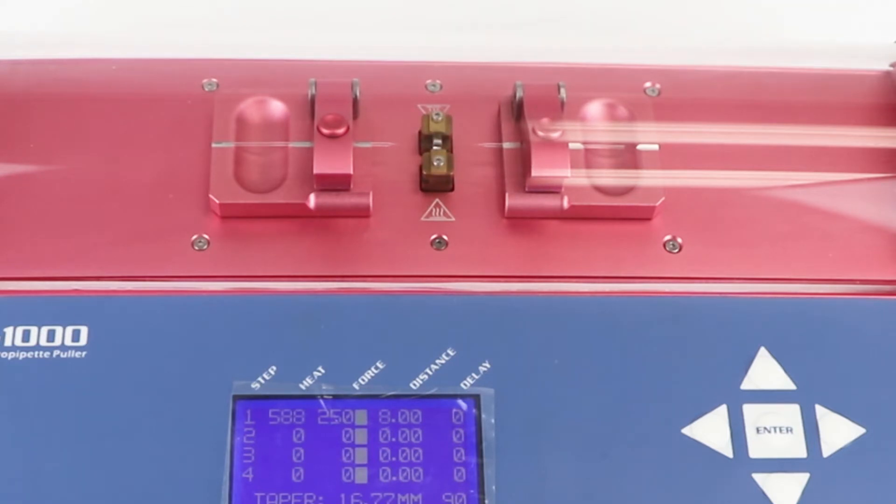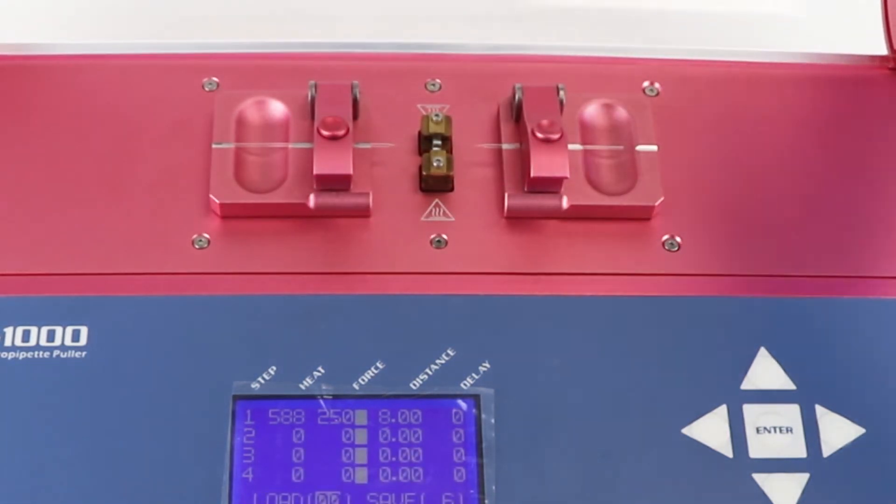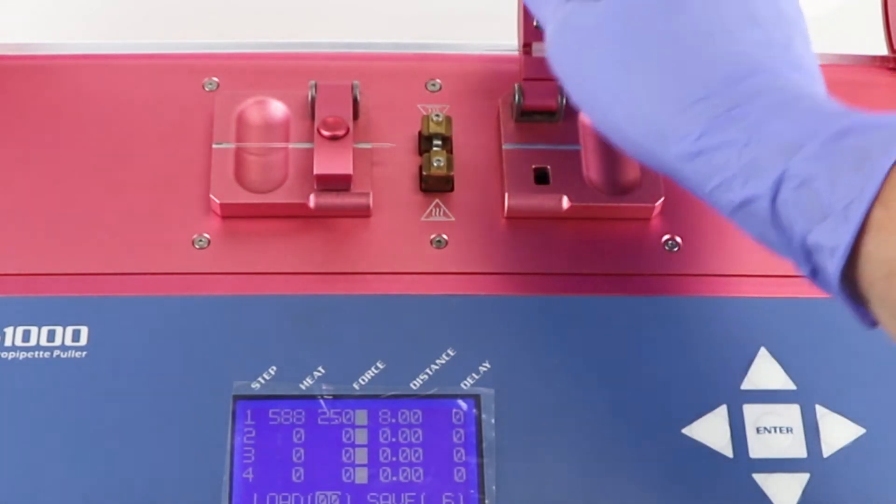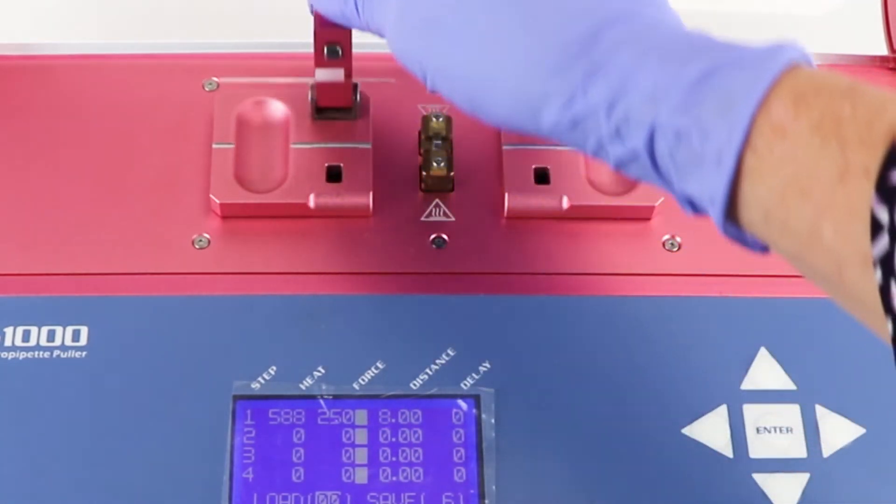The Pull 1000 is capable of producing a vast array of pipette shapes such as a long graduated taper, a short graduated taper, and even a short taper B-stinger.